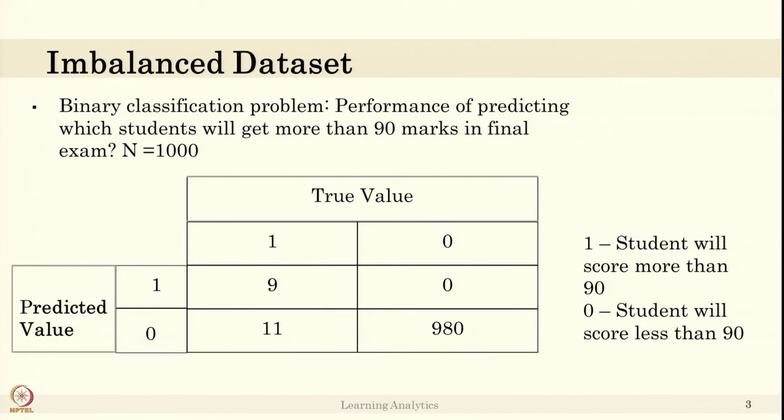Consider there are only 20 students who got more than 90 and other 980 students got less than 90 marks. This data set is imbalanced. For example, in the true value, there are only 20 positive classes and 980 negative classes. If we have these kind of imbalanced data sets, what will happen?